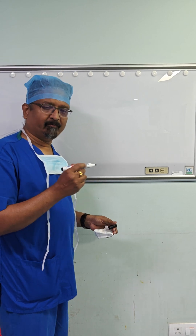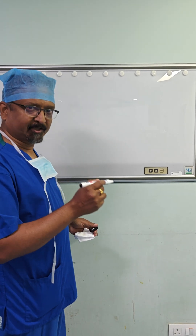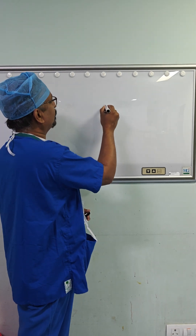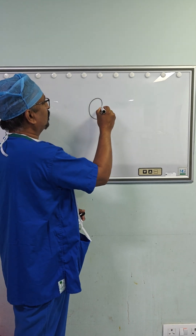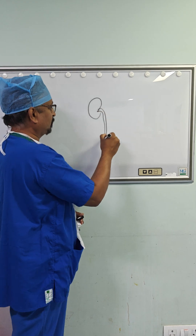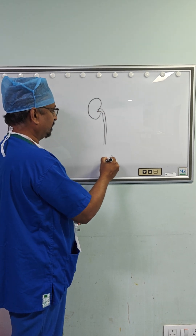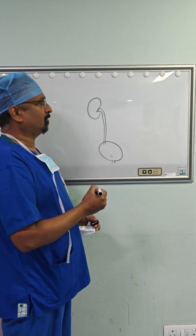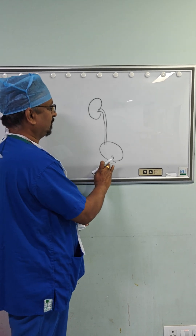Today I want to explain about duplication anomalies. Normally, we have one kidney, one ureter, and that goes to the bladder and opens somewhere there. That is how the normal ureter and everything is arranged.